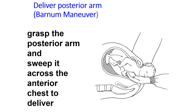Delivery of the posterior arm is known as the Burnham maneuver. The examiner inserts one hand into the vagina, holds the baby's posterior arm, and sweeps it across the anterior chest wall to manually deliver it. Once the posterior shoulder is released, the anterior shoulder will come out automatically.